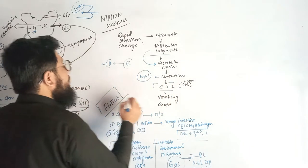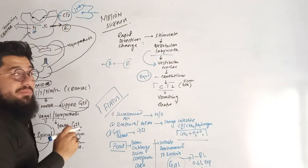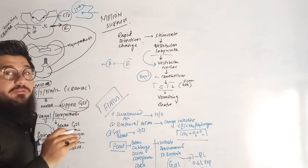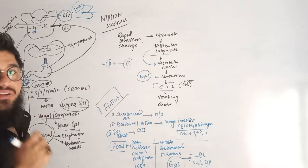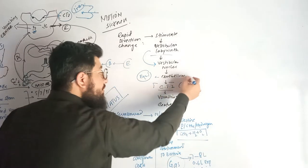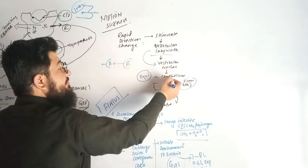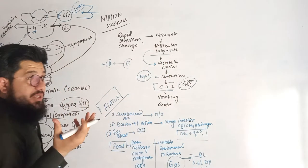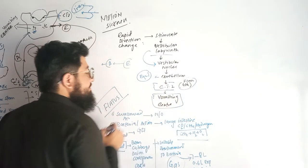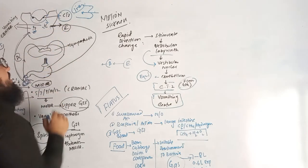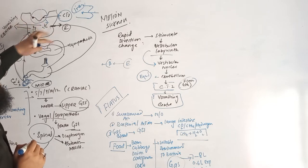The cerebellum then gives the signal to the CTZ — the chemoreceptor trigger zone. This chemoreceptor trigger zone is a particular portion of the brain located on the floor of the fourth ventricle. We have four ventricles: two lateral ventricles, and the third and fourth ventricles. The receptors on the floor of the fourth ventricle receive signals from the cerebellum and other areas of the body.